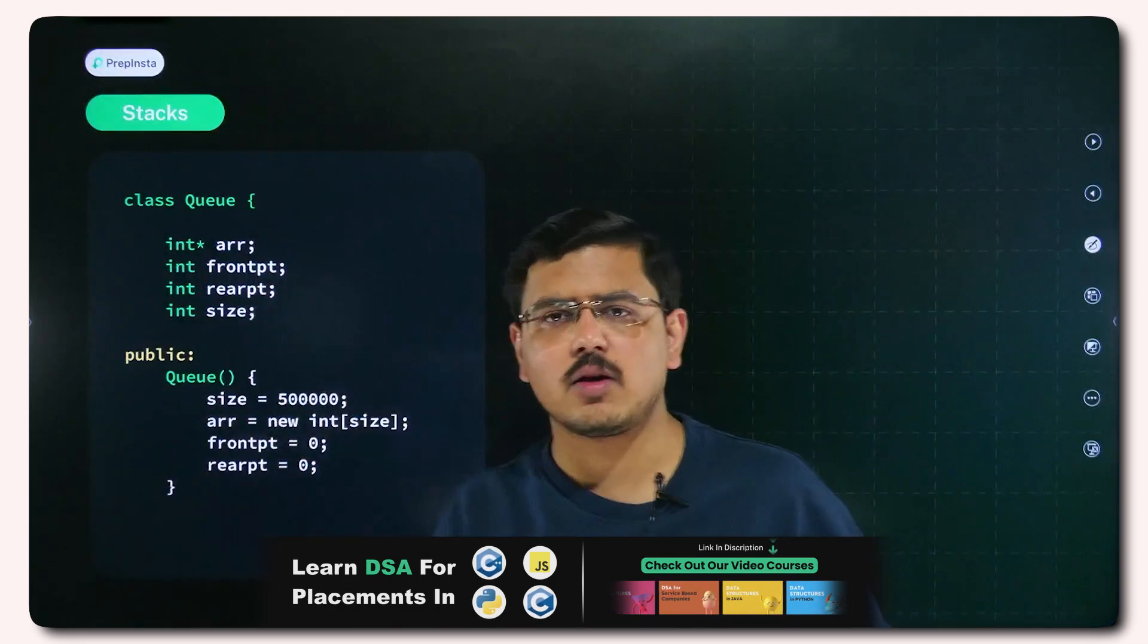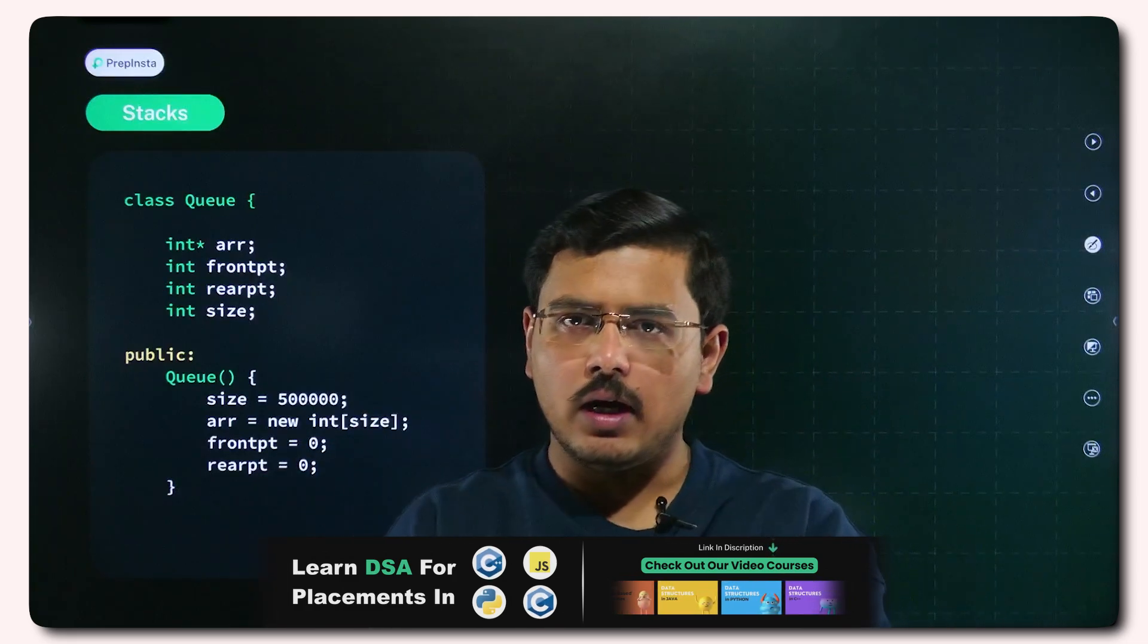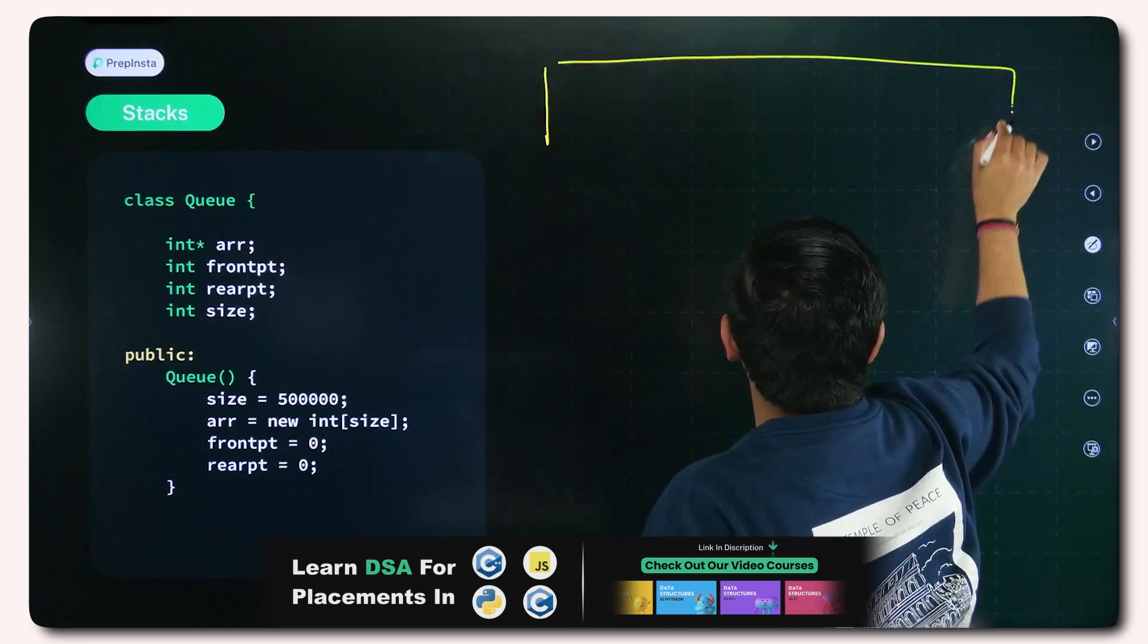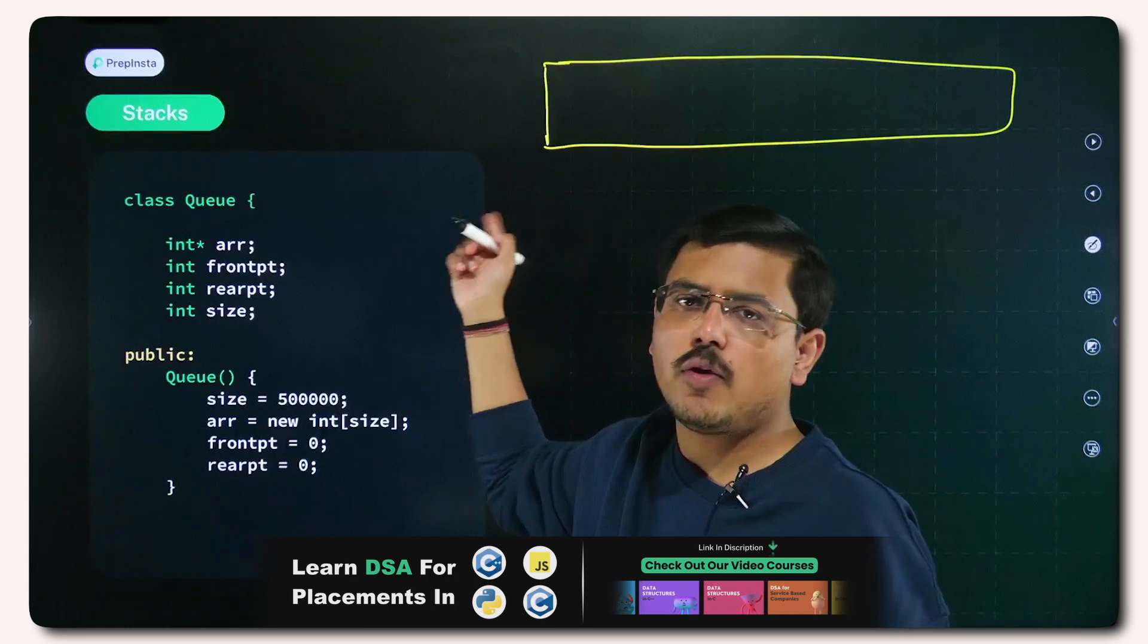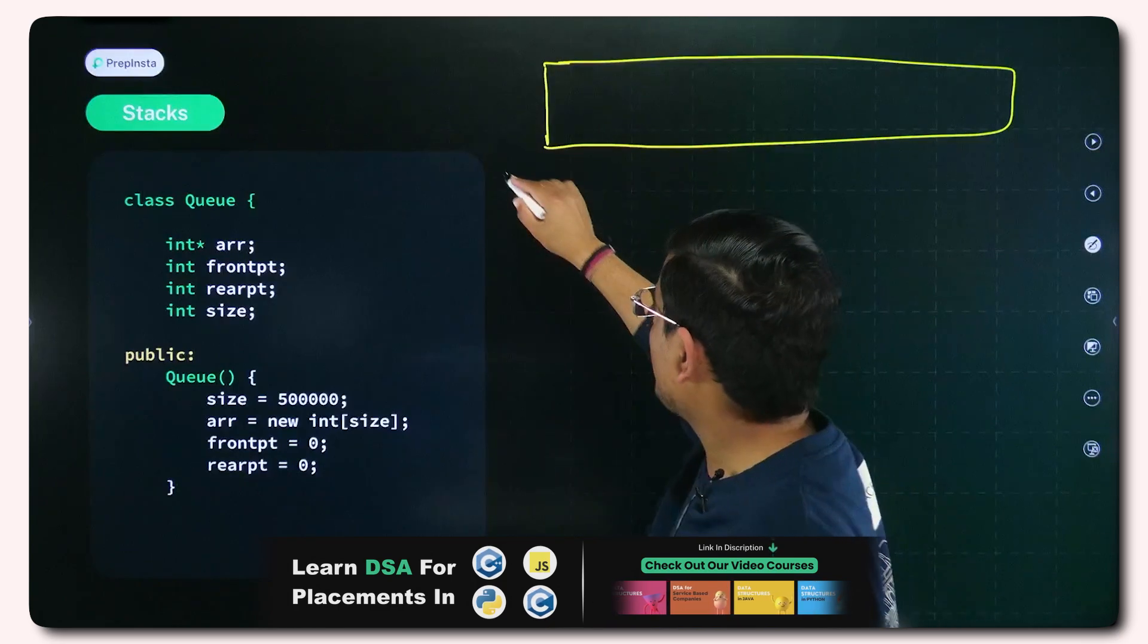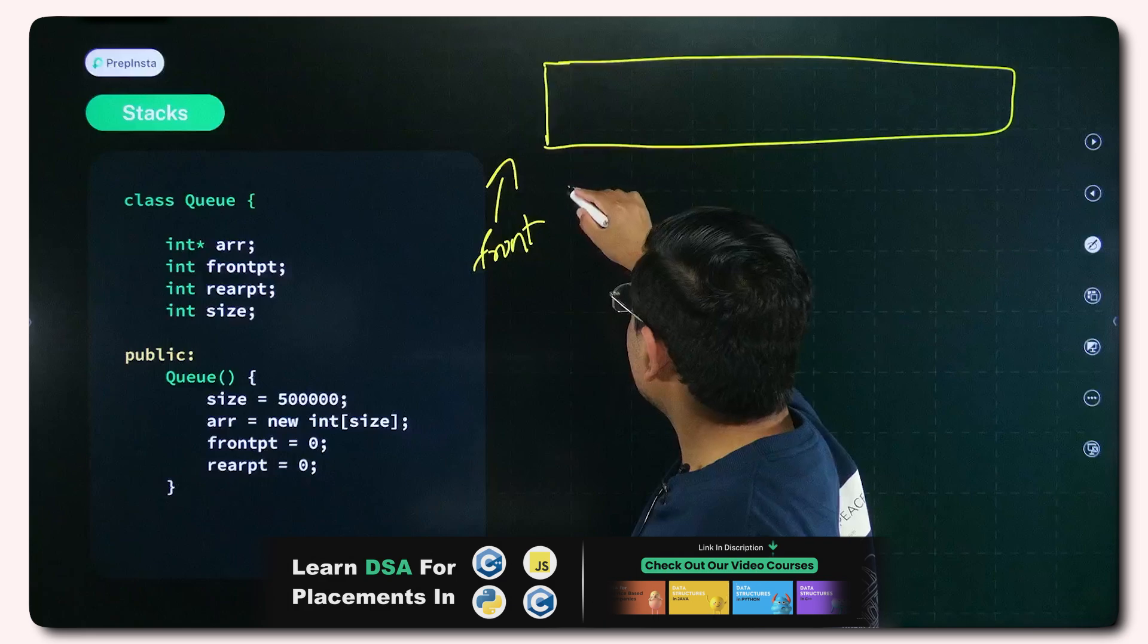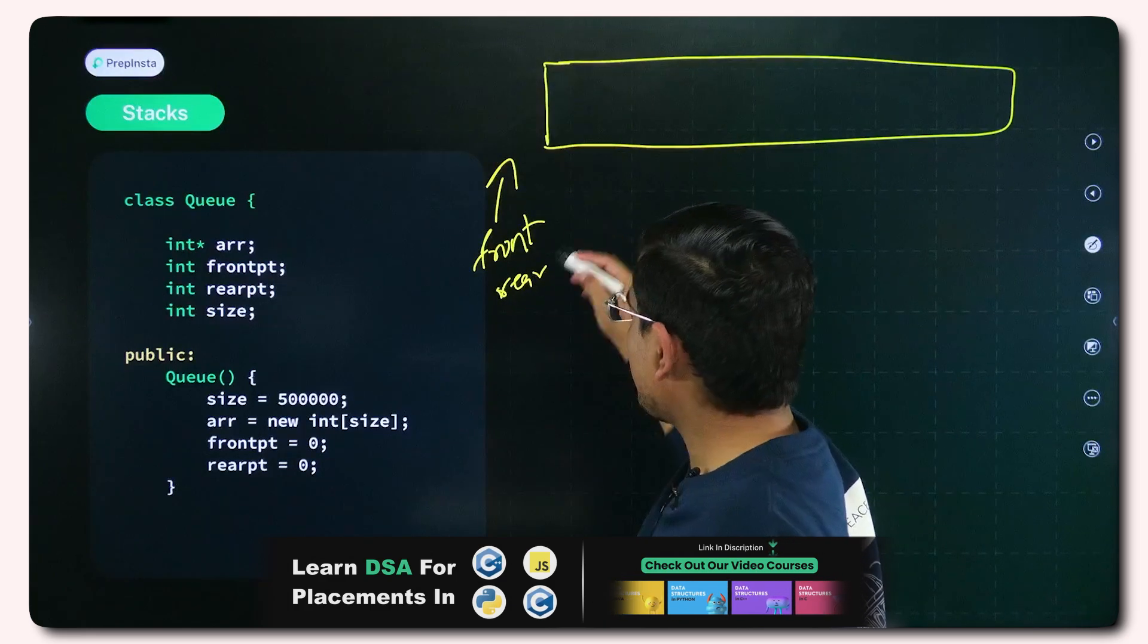This is the basic code and we'll see subsequent code as well but for now let's have a quick recap. If this is a queue then from front happens the dequeuing or the removal of any element. The addition of element would happen from rear. There are two pointers, front and rear.